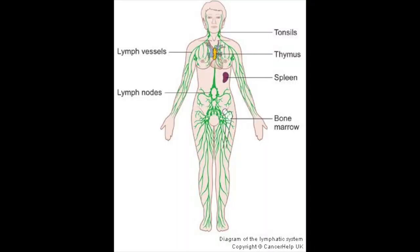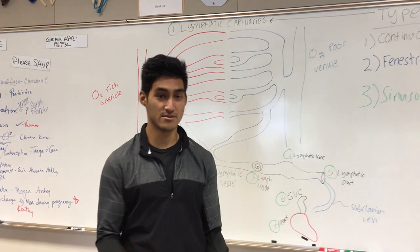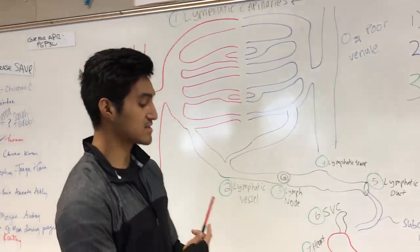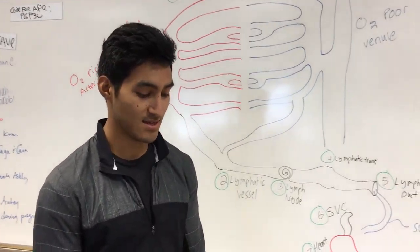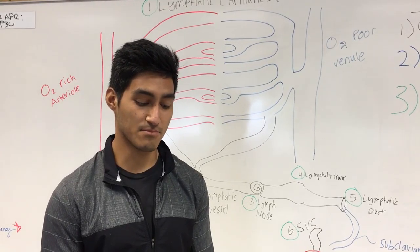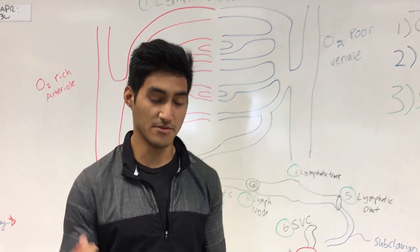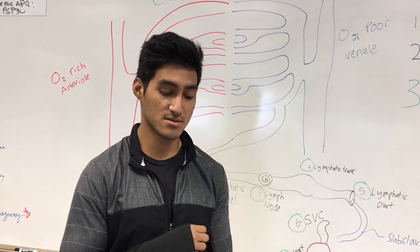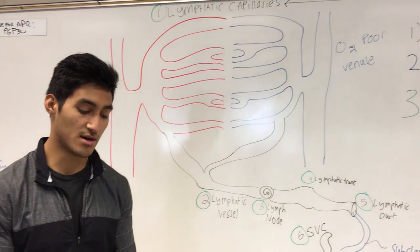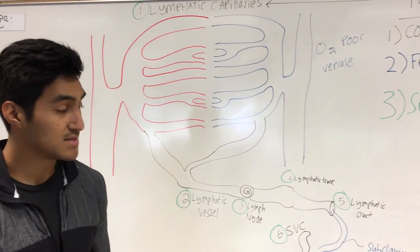The lymphatic system is basically a network of vessels, tissues, and nodes. The three major functions of the lymphatic system include returning leaked plasma — the fluid in blood vessels — from tissue spaces to the heart.